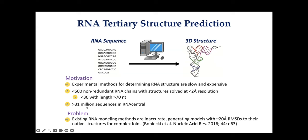There's a huge gap between known sequence information and known RNA tertiary structure information. Existing RNA modeling methods tend to be less accurate — we generate models with about 20 angstrom RMSDs to their native structures for more complex folds in blind RNA structure prediction experiments. What we really want to develop are accurate tertiary structure modeling methods that, given just an RNA sequence, can accurately predict the RNA 3D structure, which is what determines RNA function.